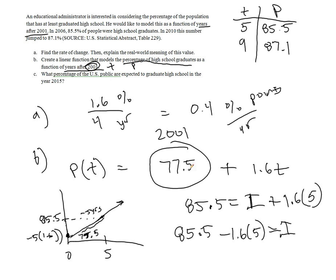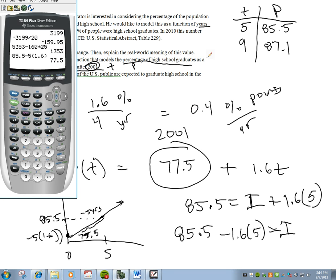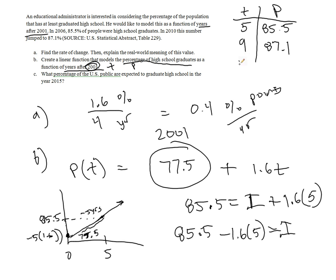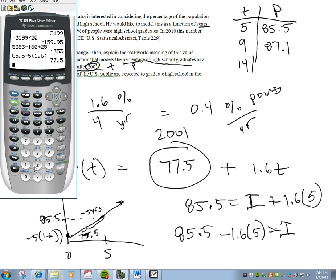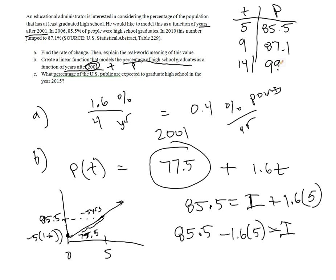And see what percentage of the U.S. public are expected to graduate high school in the year 2015. Well, that's going to be, 2015 is 14 years later, and so if I do 77.5 plus 1.6 times the number of years it's passed since 2001, I get 99.9%. Wow, that's pretty optimistic, and it probably will not happen, but that's what our model predicts.